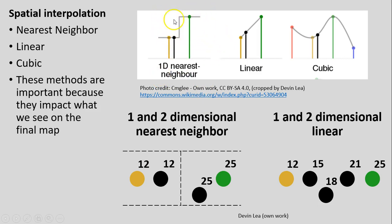Linear spatial interpolation, as its name implies, has a constant rate of change over space between known values. With our same example of 12 on the left and 25 on the right, values change linearly — 12, 13, 14, 15, 16, 17, 18, 19, 20, 21 — all the way up to 25, equally spaced across that distance.